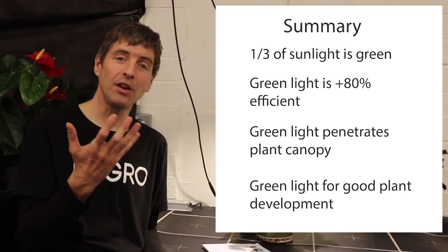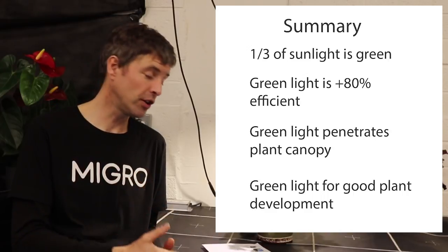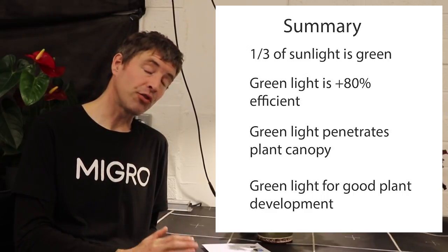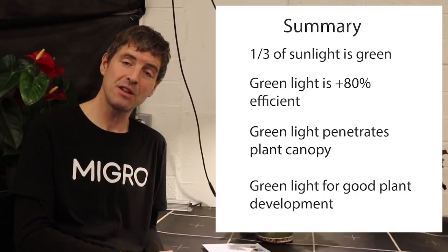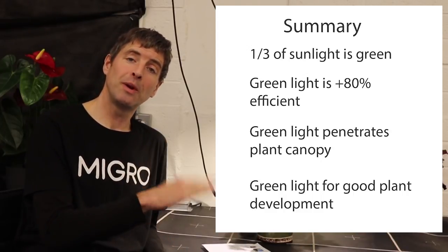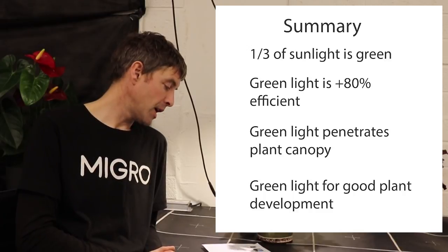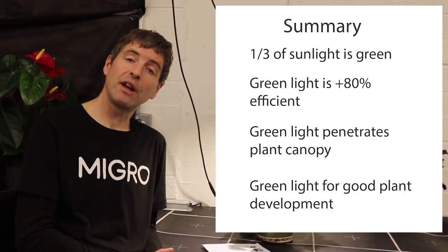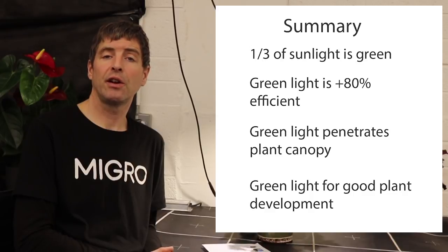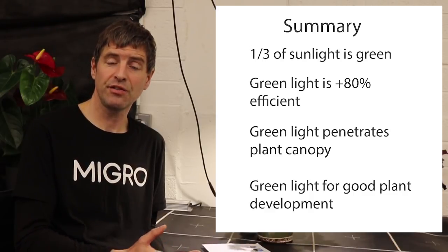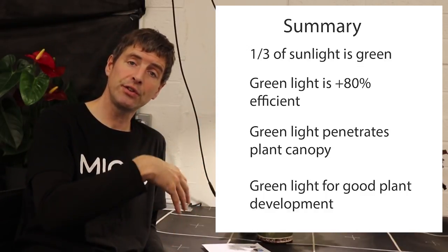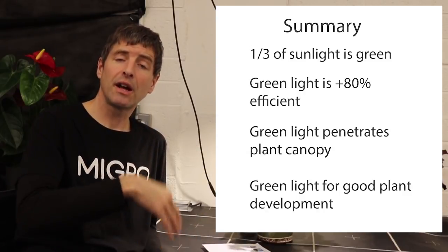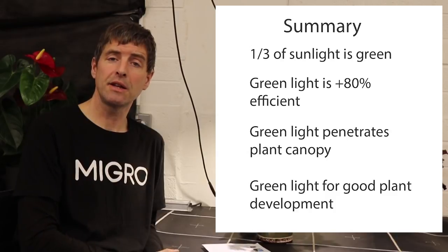To summarize: one-third of sunlight is green. Green light is tested to be at least 80% photosynthetically efficient — blue being somewhat less, red being a bit more. Green light is very beneficial for growing, particularly for its penetration effect: some of the green light gets reflected off leaves, but those photons are often still photosynthesized as they bounce their way down into the canopy.